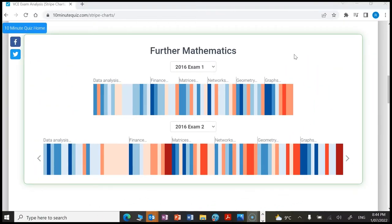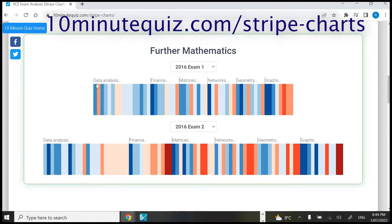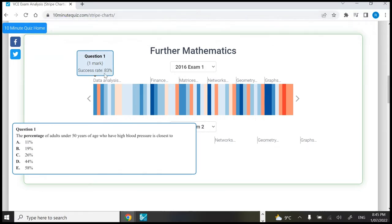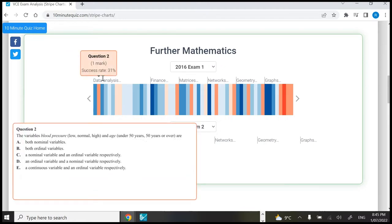What we're looking at here is the 2016 exam 1 and 2, and these are stripe charts. Every stripe represents a question. These charts are available on 10minutequiz.com, so you can check it out for yourself. The blue stripes represent the questions that were answered correctly by a lot of students, and the red and orange stripes represent the questions that students found difficult.